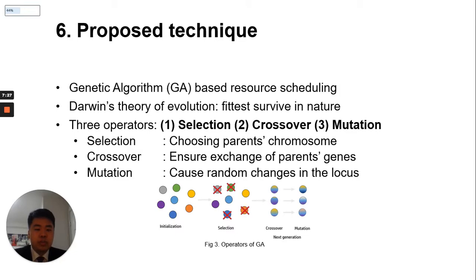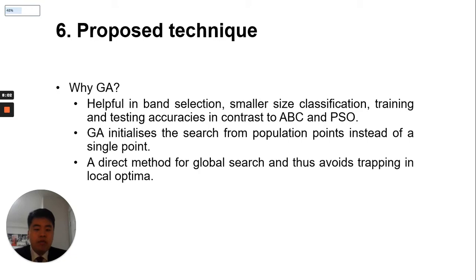GA is proposed for resource management, mimicking Darwin's theory of evolution where the fittest survive. The three main operators in GA are selection, crossover, and mutation, as shown in Figure 3. Selection enables GA to choose from parent chromosomes; crossover confirms the exchange of parent mutation genes; mutation ensures changes in genes. GA is favorable for band selection, smaller size classification, and higher training and testing accuracy, in contrast to ABC and PSO. GA initializes the search from population points instead of a single point, ensuring it does not trap in local optima.